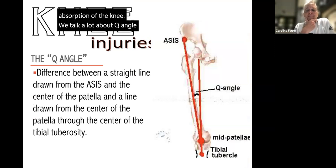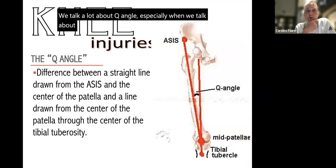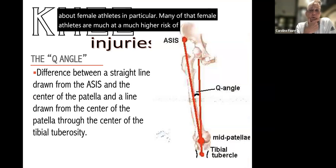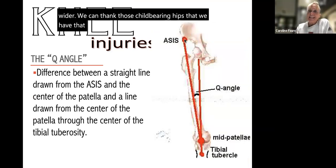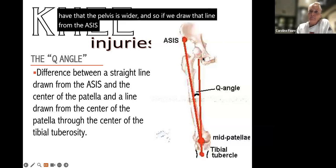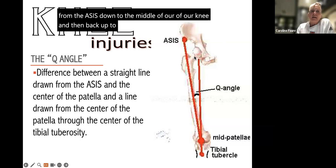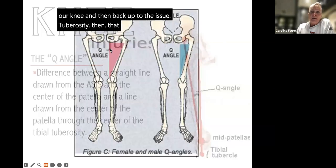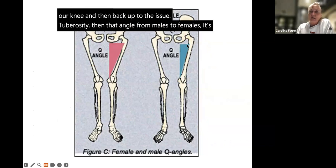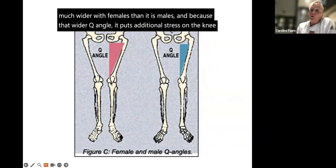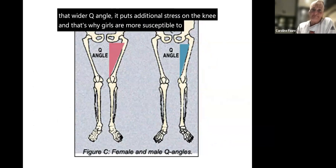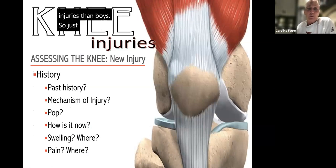We talk a lot about Q angle, especially when discussing female athletes. Female athletes are at much higher risk of ACL injuries because their Q angle is wider due to a wider pelvis. If we draw a line from the ASIS down to the middle of the knee and back up to the ischial tuberosity, that angle is much wider in females than in males. Because of that wider Q angle, additional stress is placed on the knee, which is why girls are more susceptible to ACL injuries than boys.